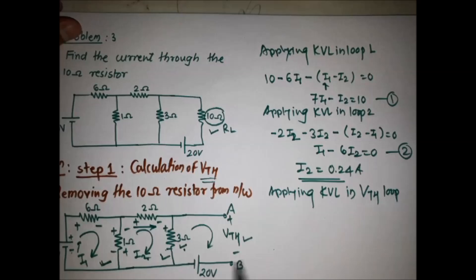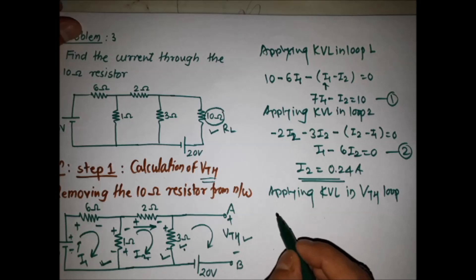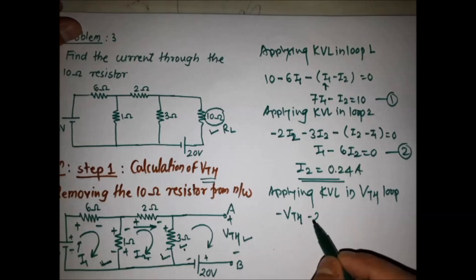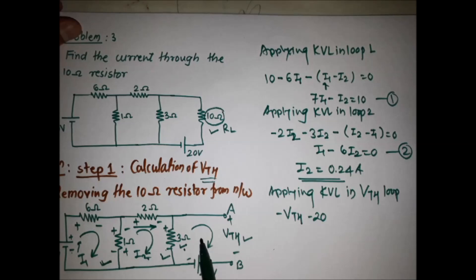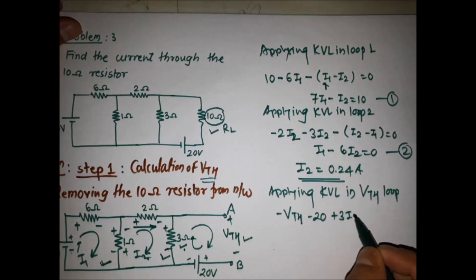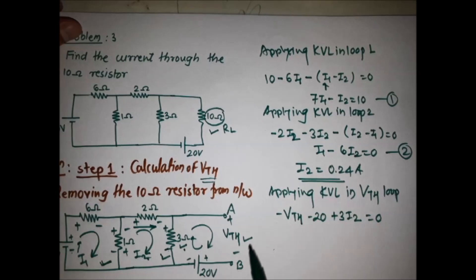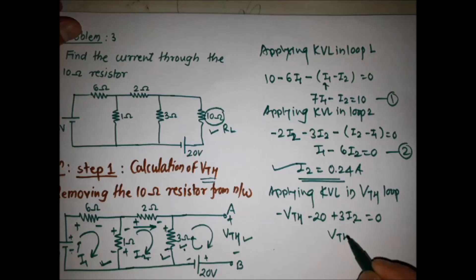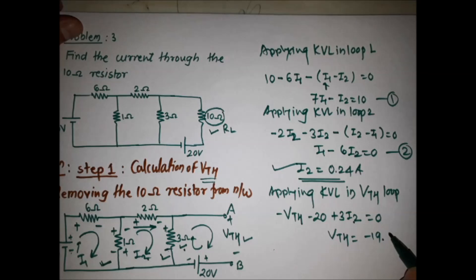Now applying KVL in the VTH loop: starting from VTH, the direction is from A to B, so it is -VTH. For the 20 volt source, plus to minus gives -20. For the 3 ohm resistor, since the terminals are open circuited and no current flows through this loop, we use the previous sign convention of I2. Considering the clockwise direction, it is +3·I2. Setting the sum equal to zero gives the VTH loop equation.